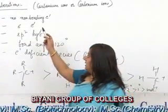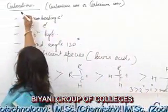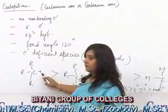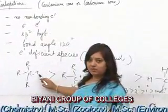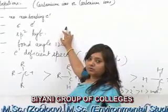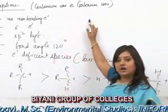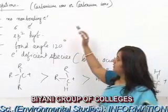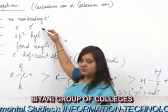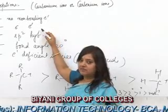Now carbocations — as the name indicates, carbo and cation — where cation means a positive charge. Carbocations are also called Carbonium ions or Carbenium ions. These are positively charged species which have 6 electrons in their valence shell.